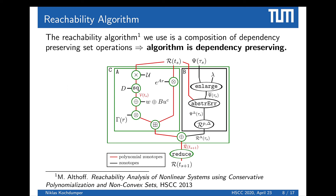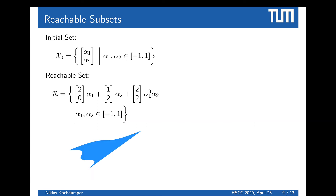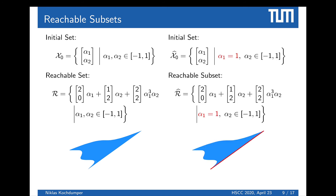To illustrate with an example: consider the initial set, with the reachable set given as a polynomial zonotope. We want the reachable set for a modified initial set — a subset of the original — obtained by fixing factor alpha1 = 1 (instead of the original range of -1 to 1). All we need to do to compute the reachable subset is substitute alpha1 = 1 into the final reachable set expression. This very simple substitution can be implemented very efficiently, enabling fast extraction of reachable subsets with our new approach.